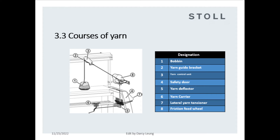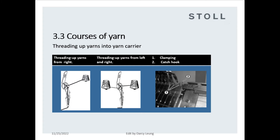Courses of yarn steps: Step 1, put the bobbin on yarn cone platform. Step 2, thread yarn hanger on yarn guide bracket from yarn bobbin — please keep yarn straight float. Step 3, yarn hanger over to yarn control unit. Step 4, wrap yarn round the friction feed wheel, pass through the lateral yarn tensioner, then through the yarn deflector and yarn feeder, and finally cut and clamp on the clamping device.